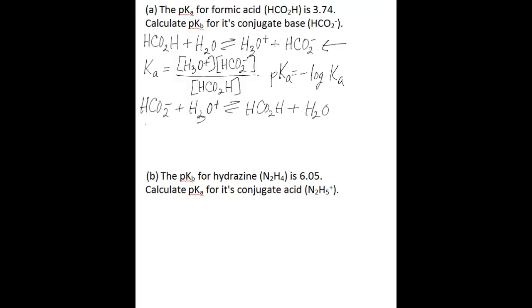And the Kb would be derived by taking the concentration of formic acid and dividing that by the concentration of the conjugate base of formic acid times the hydronium ion concentration.